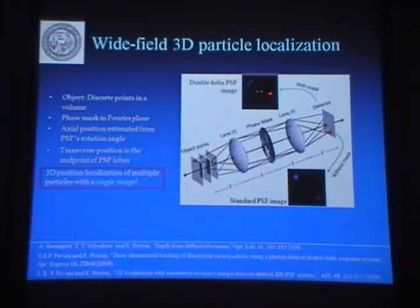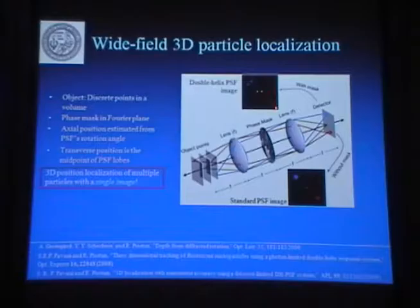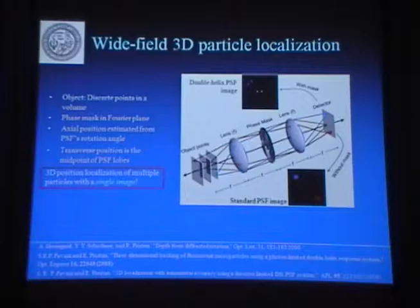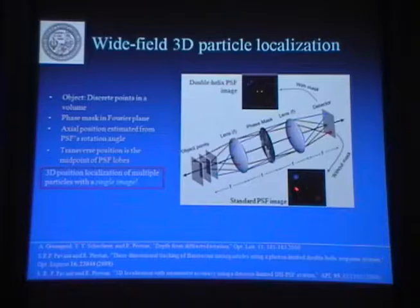This is a 4F system. We place a mask that generates these helical beams in the Fourier plane. So if you have point sources at different Z locations, at the detector you are going to see — rather than spots — for each point source, you are going to see two spots. And as I mentioned, these are going to rotate. By looking at the angle of rotation, you can, from a single image, tell the three-dimensional position. From a standard system you can tell the XY position, but you could not distinguish between different depths — here they are blue and red just for clarity. But here we break the symmetry, so we see different angles.